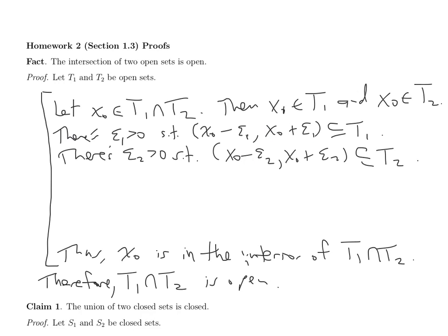They're both neighborhoods of X0, so think about what a number line would look like. If you have X0 and you have one neighborhood of X0, and then another neighborhood of X0, those two neighborhoods have to be nested — one of them is going to be contained within the other. So whichever one is contained inside the other is both contained in T1 and contained in T2. So I'll just let epsilon be the minimum of epsilon 1 and epsilon 2.